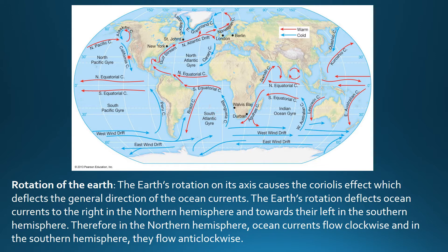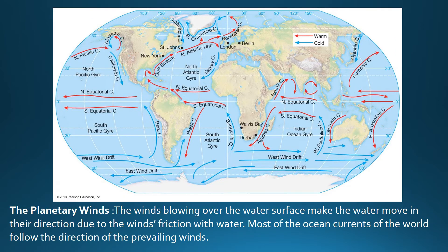As you can see on the map, this is the equator. In the Northern Hemisphere, because of the Coriolis effect, the ocean currents flow clockwise. In the Southern Hemisphere they flow anti-clockwise, as you can see on the map.